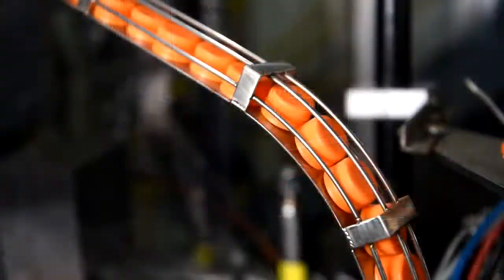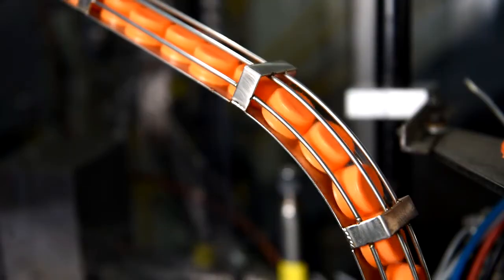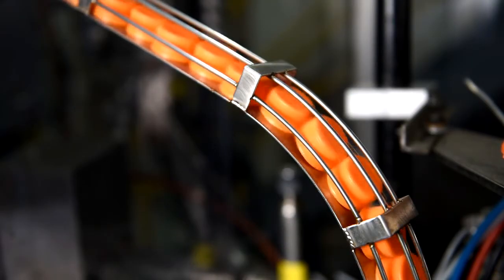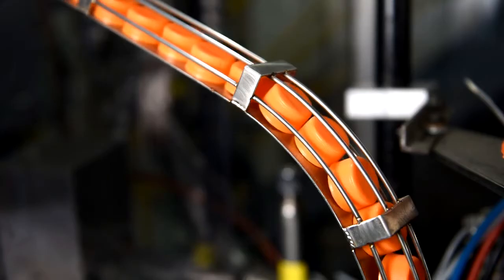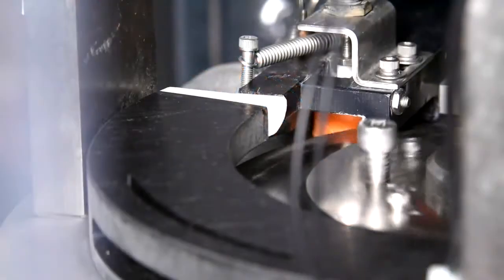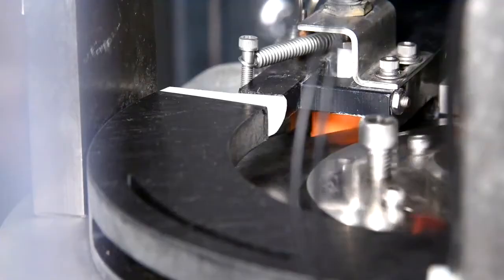Caps from the sorter travel through a cap chute which feeds them single file into the capping machine. At the end of the cap chute, the caps are fed into a star wheel when needed by the capping machine.